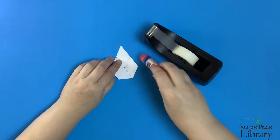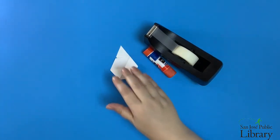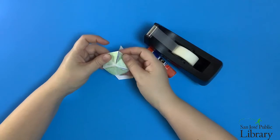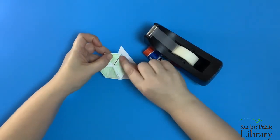However, I'm going to use glue. I don't like using tape for the hexaflexagons because it will leave a little gap like this one here and I think glue works better.